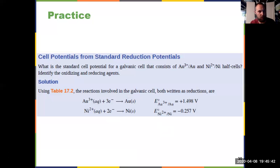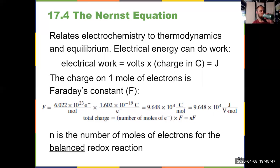That brings us to 17.4, the Nernst equation. This is where we see chapter 16 and chapter 17 come together: electrochemistry and thermodynamics. That's all about the fact that we know electrical energy can do work. Electrical work is measured by taking volts - our cell potential - times the charge in coulombs, which equals joules. The charge on one mole of electrons is equal to Faraday's constant, represented by a capital F. The value of Faraday's constant is 9.648 times 10 to the fourth joules per volt mole, and we will use that in some calculations.